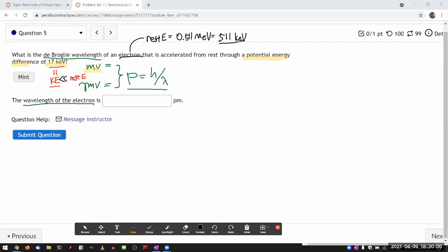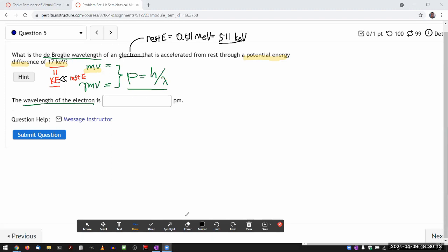So I'm comparing about 500 to 17. Well, 17 is smaller by a factor of 20 or so. So I'm going to assume that seems small enough. So I will use the non-relativistic expression.